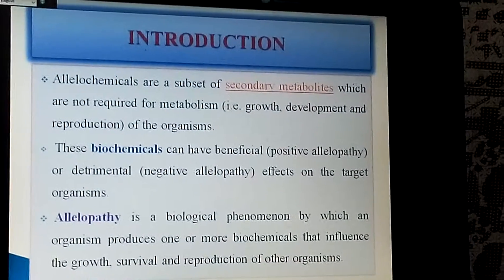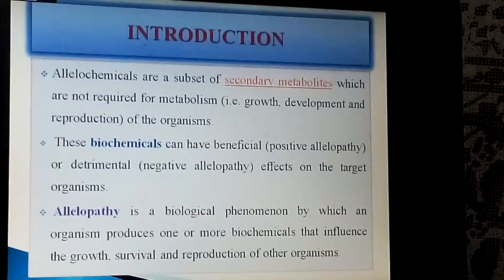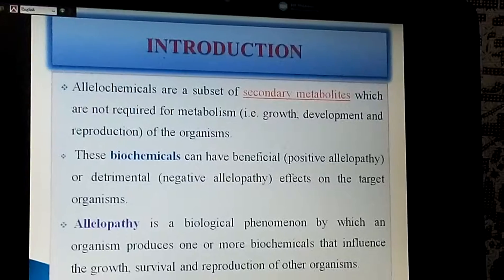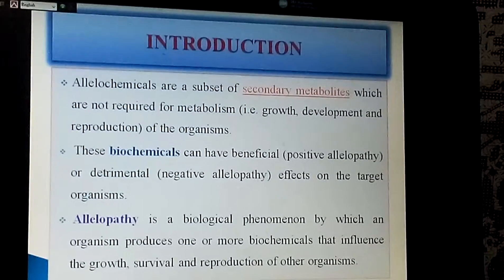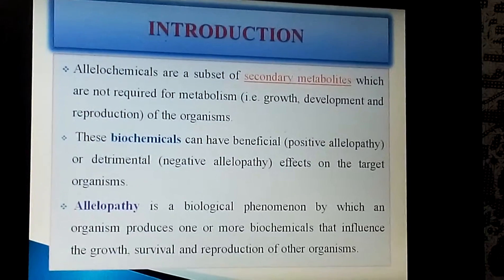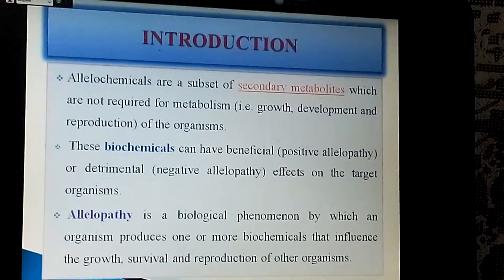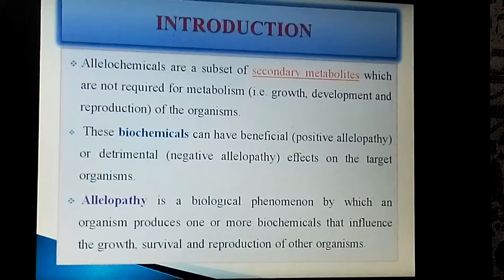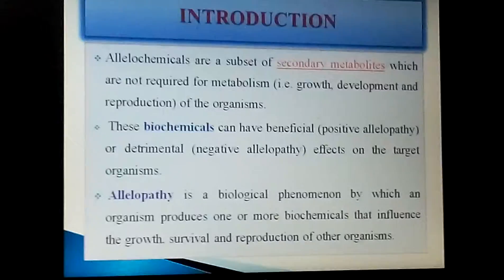What are allelochemicals? Allelochemicals are a subset of secondary metabolites which are not required for metabolism. These biochemicals can have beneficial or detrimental effects on the target organism. What is allelopathy? Allelopathy is a biological phenomenon by which an organism produces one or more biochemicals that influence the growth, survival, and reproduction of other organisms.